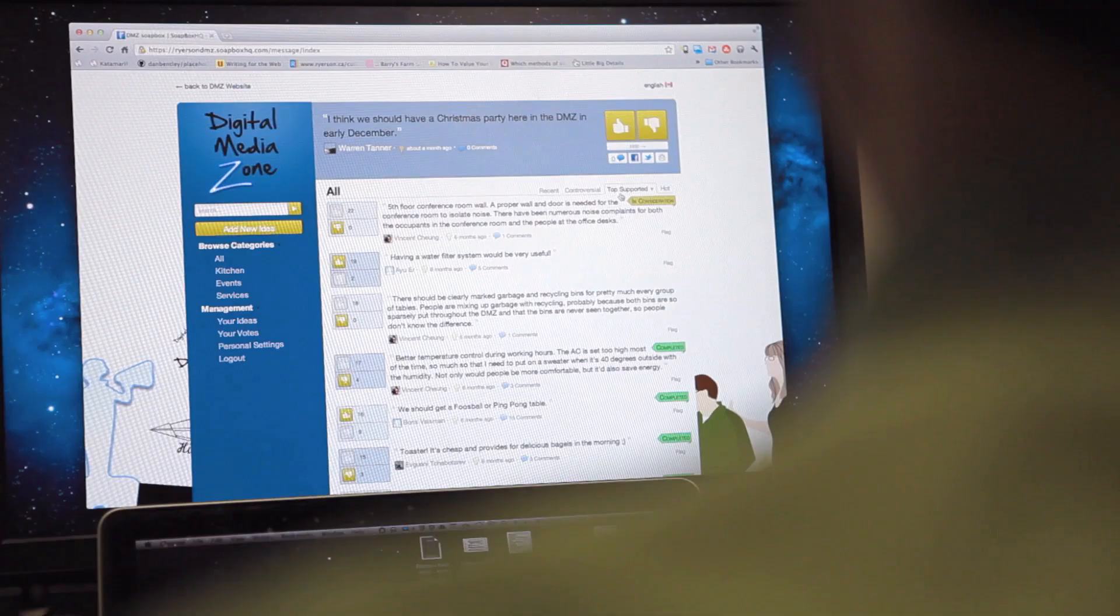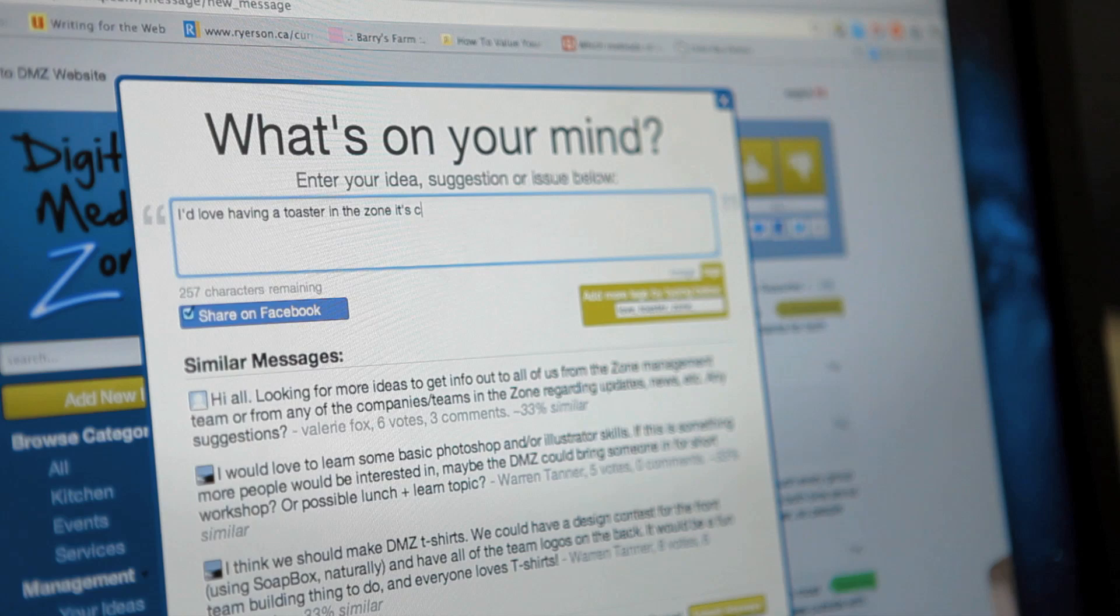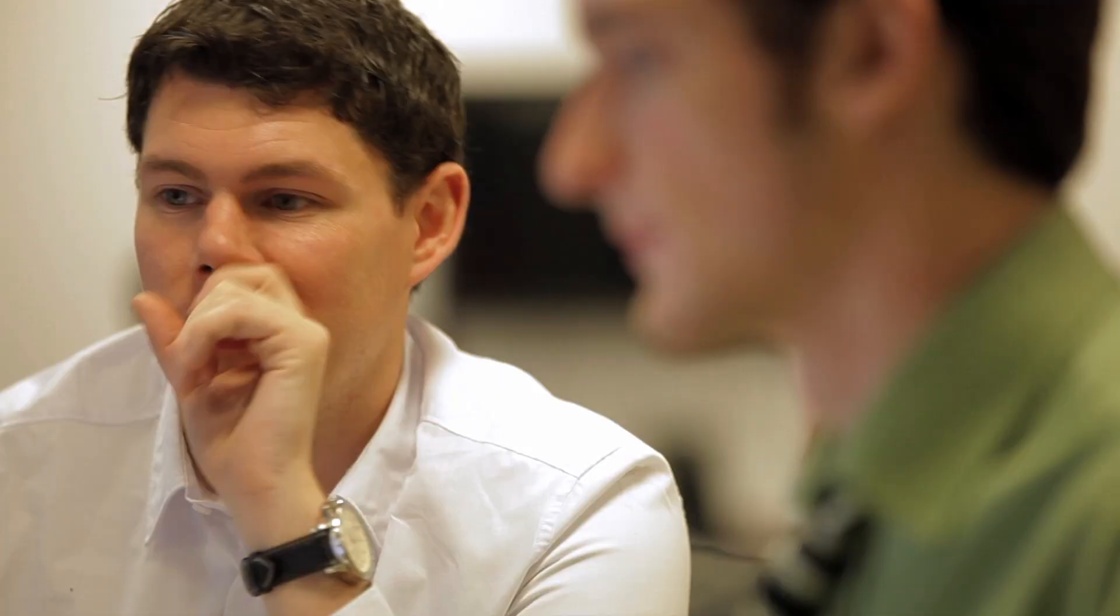HitSend's online platform, Soapbox, allows each person to get their idea in front of their community. Users vote, scores are tabulated, and decision makers have instant access to the collective voice of their community. Change can happen immediately. It's an idea whose time has come.